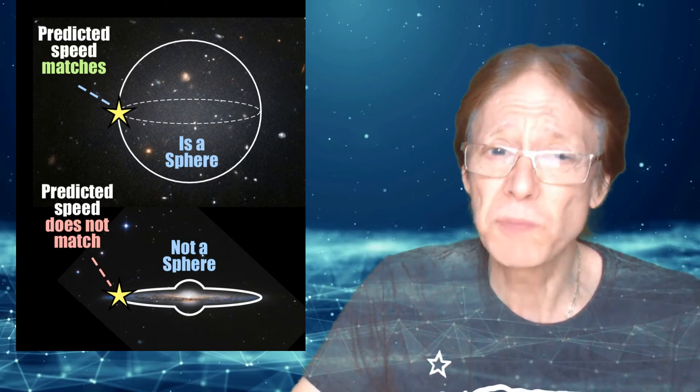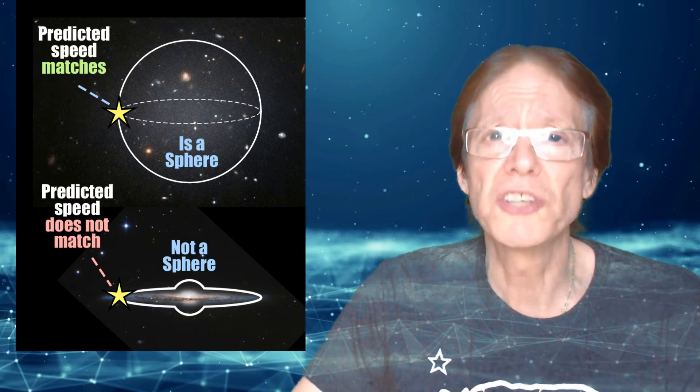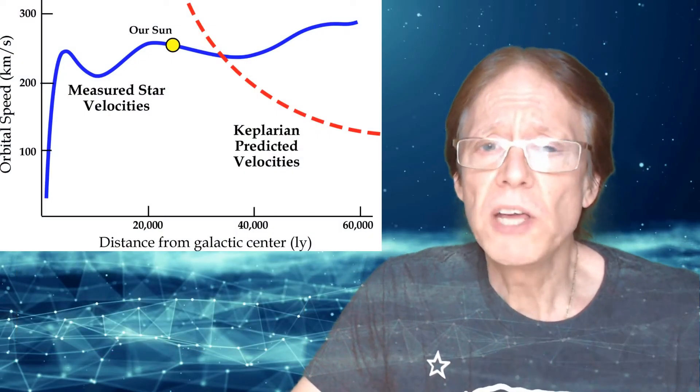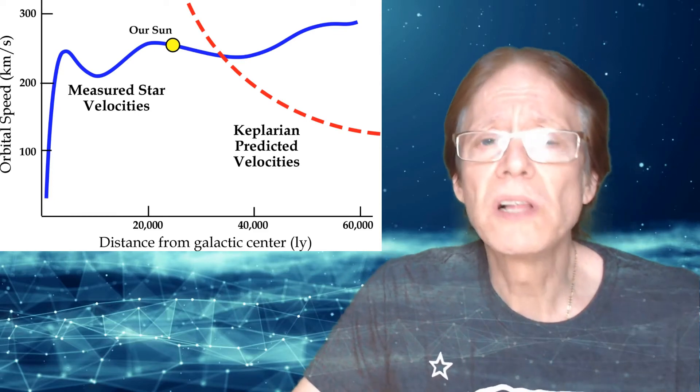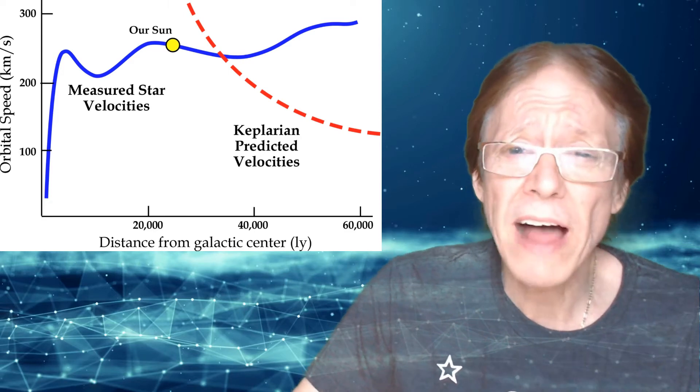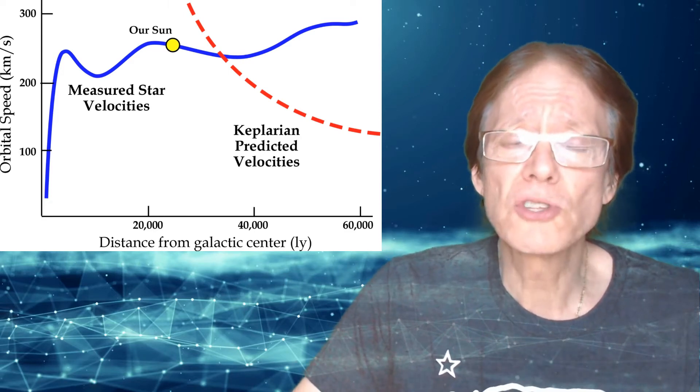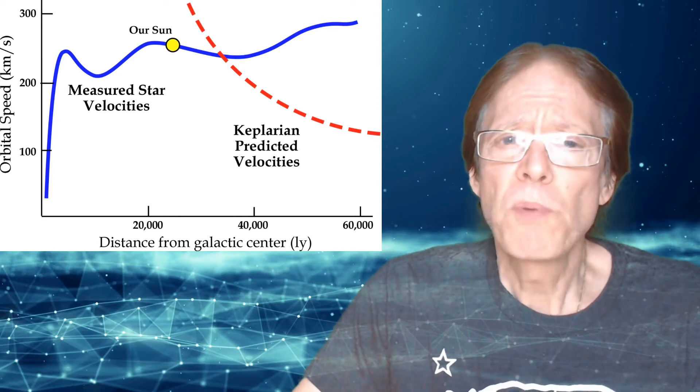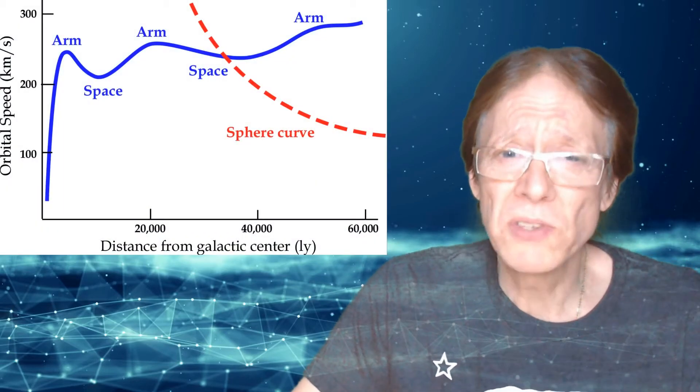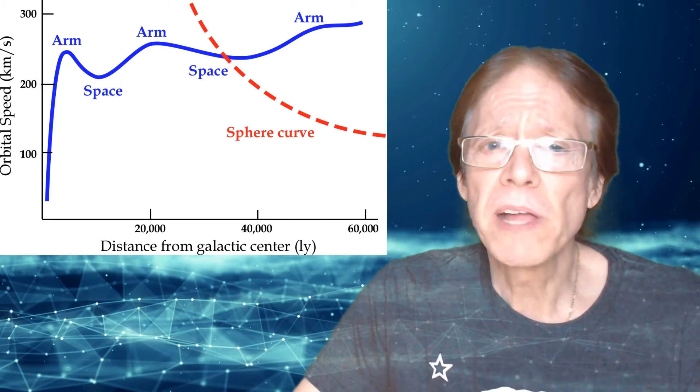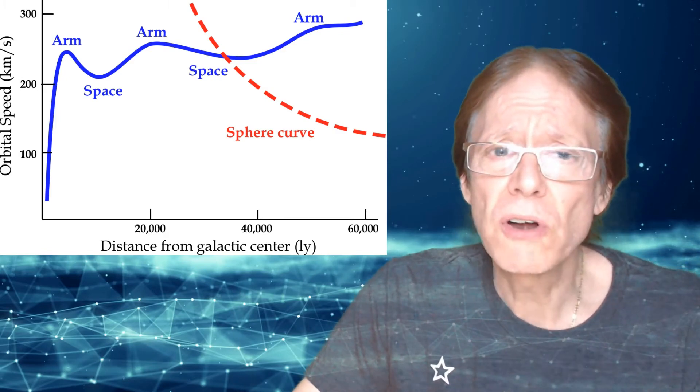This graph is from my father's paper and subsequent video talk on his YouTube channel, which clearly shows the discrepancies between a point mass treatment of our galaxies versus the actual star velocities measured in our galaxy. My father points out that one can see the arms and spaces in the galaxy in the graph of the star velocities. The Keplerian drop-off is the curve expected for a uniform gravitational field of a sphere.